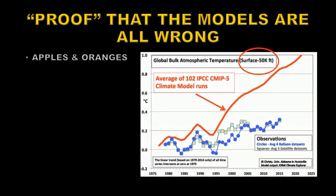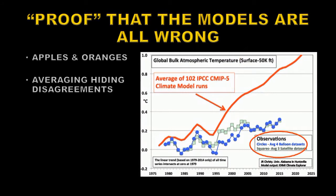First of all, we're comparing apples and oranges. The red curve is surface temperatures on the earth, and the data points below are from high altitude measurements, and so are a completely different quantity from what the red curve is representing.